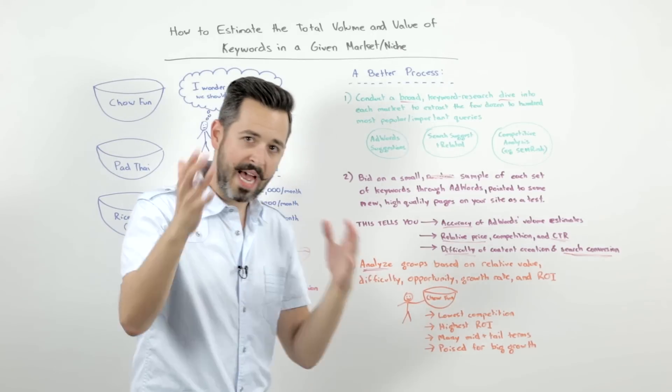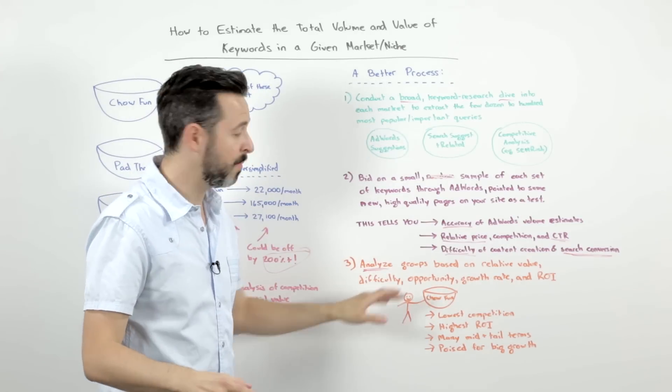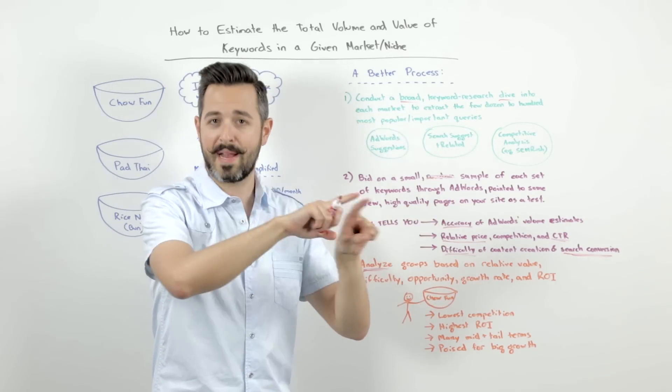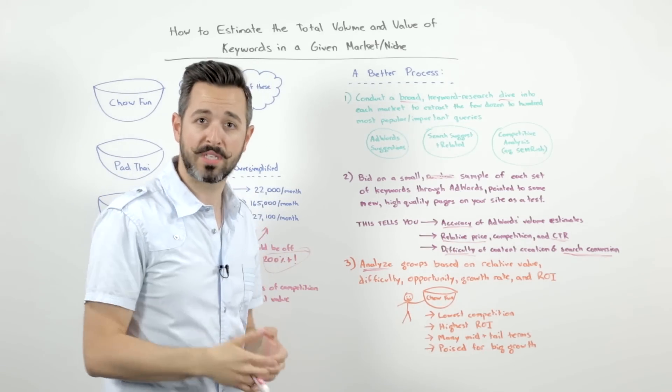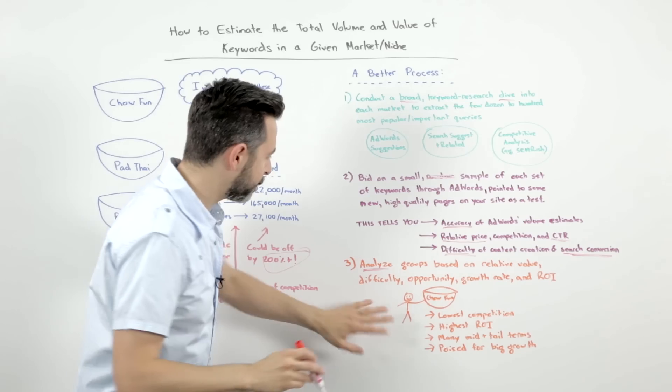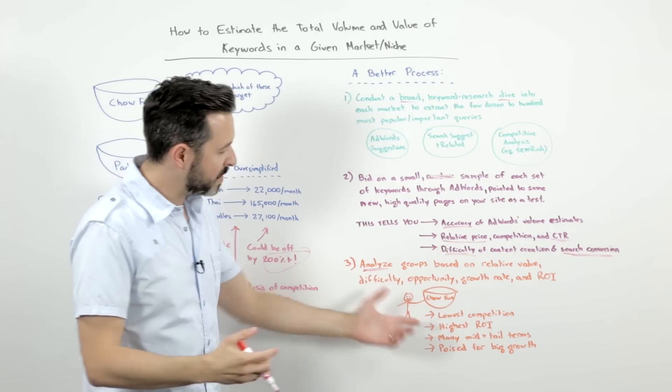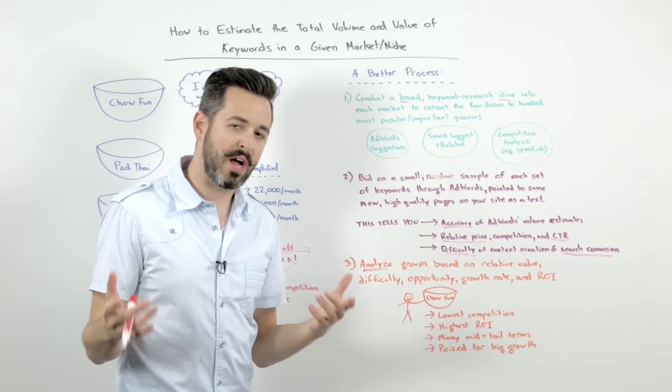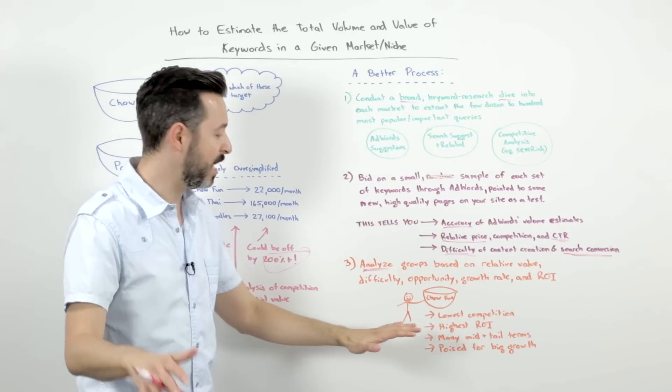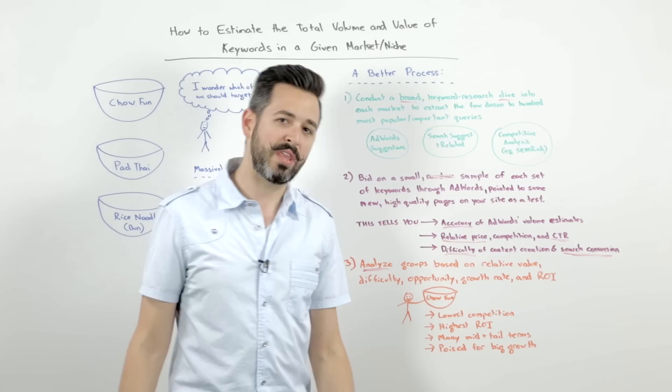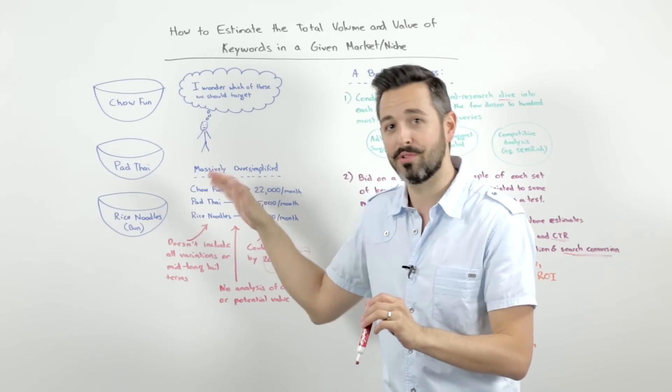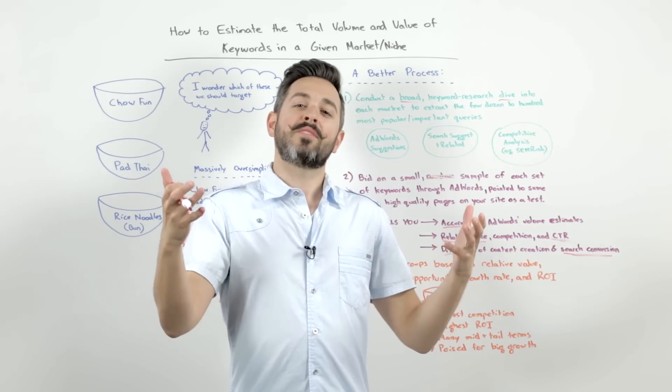And based on that, we can do a true analysis, an accurate analysis of the different groups based on those things. Relative volume, difficulty, opportunity, growth rate, and ROI. Growth rate might be an interpreted thing, but you can look at the Google Trends to kind of figure out over time whether a broad group of terms is getting more or less popular. Could use something like Mention.net or Fresh Web Explorer from Moz to look at mentions as well. And now, you're going to be happy here. So I might have chosen Chow Fun because I looked and I said, hey, you know what? It did not have the most volume overall, but it did have the lightest competition, the highest return on investment. We were great at creating the content. We were able to engage our visitors there. Had lots of mid and long tail terms. We think it's poised for big growth with the growth of Chinese noodles overall and the fact that the American food scene hasn't really discovered Chow Fun the way they have Vietnamese noodles and Pad Thai. So that is where we're placing our bet. Great. Now you have a real analysis. You have numbers behind it. You have estimates you can make. This process, although a little heavy, is going to get you so much further than this kind of simplistic thinking.